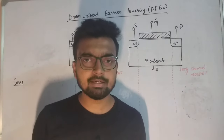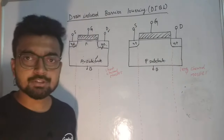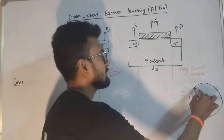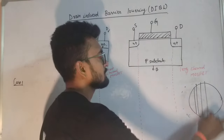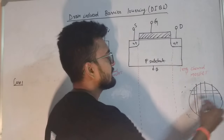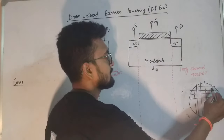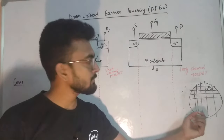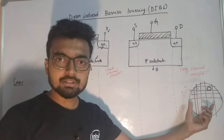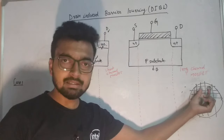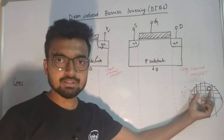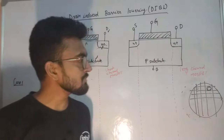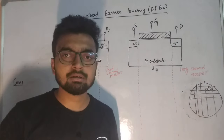Regarding manufacturing cost - given a wafer, if we cut it, each piece is known as a die. If we decrease the size of the transistor, the number of dies we can get from the same wafer is now more than before, which in turn reduces the manufacturing cost.